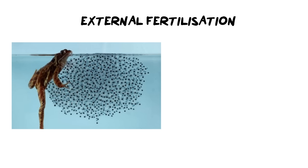We're going to focus first on external fertilization. When you study this topic you need to be very familiar with the advantages and disadvantages of each type. In the photograph you can see a frog that has made thousands of eggs, and you'll notice it's in water. This is important because a key feature of external fertilization is making many many eggs, often in an aquatic environment, and it requires very little parental care once they are laid. Because there are so many eggs, frogs are trying to increase the chances of fertilization.